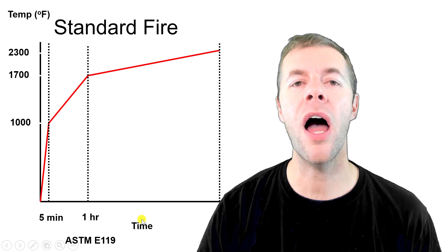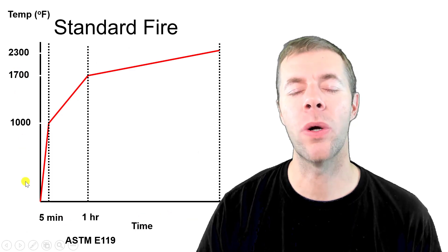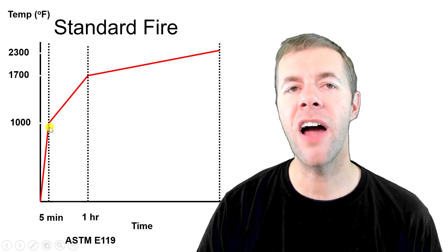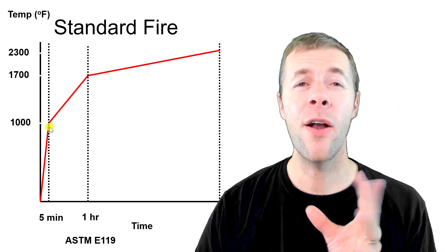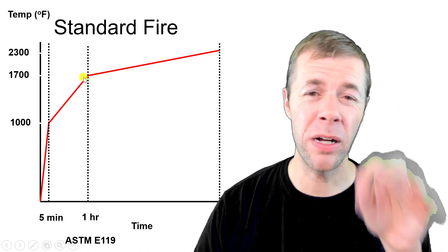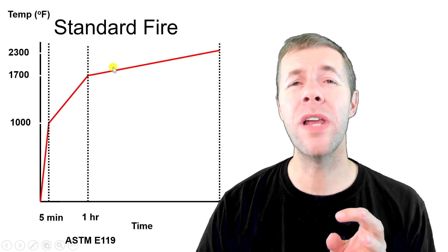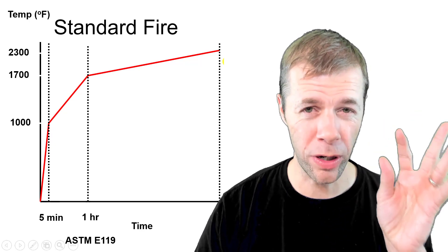On the x-axis I'm showing time and on the y-axis I'm showing temperature. Over the first five minutes the temperature goes up to about 1,000 degrees Fahrenheit, over the next hour it goes up to about 1,700, and over the next eight hours it goes up to 2,300 degrees Fahrenheit.